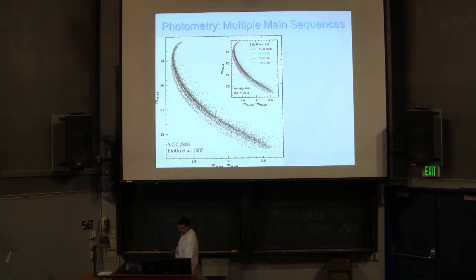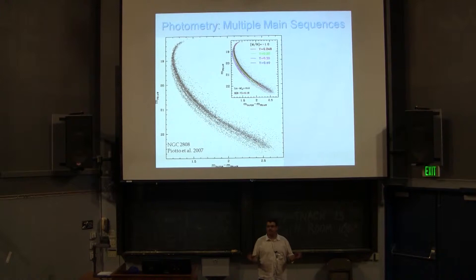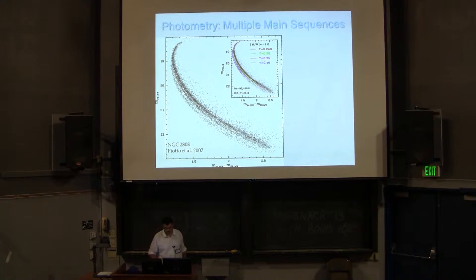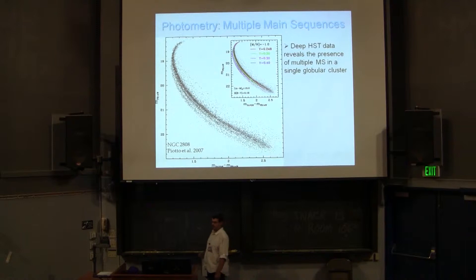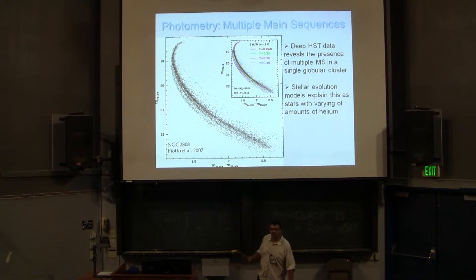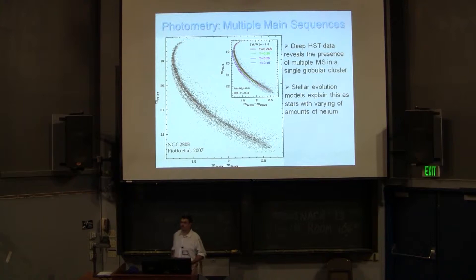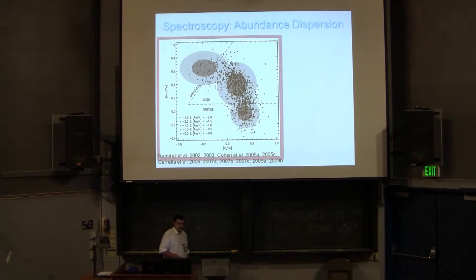This is an HST color-magnitude diagram of NGC 2808 from Piotto 2007. We all have this idea that globular clusters are nice simple stellar populations — you take your codes, get your isochrones, fit them. But if you look really closely, it's not so pretty: you start getting multiple main sequences. A globular cluster should have the same age and the same abundances, but now they have multiple main sequences. The easiest way to explain this is to take a bunch of different helium enrichments and throw them together, shifting the isochrone — you can get bluer and bluer just by changing the amount of helium in the stars.